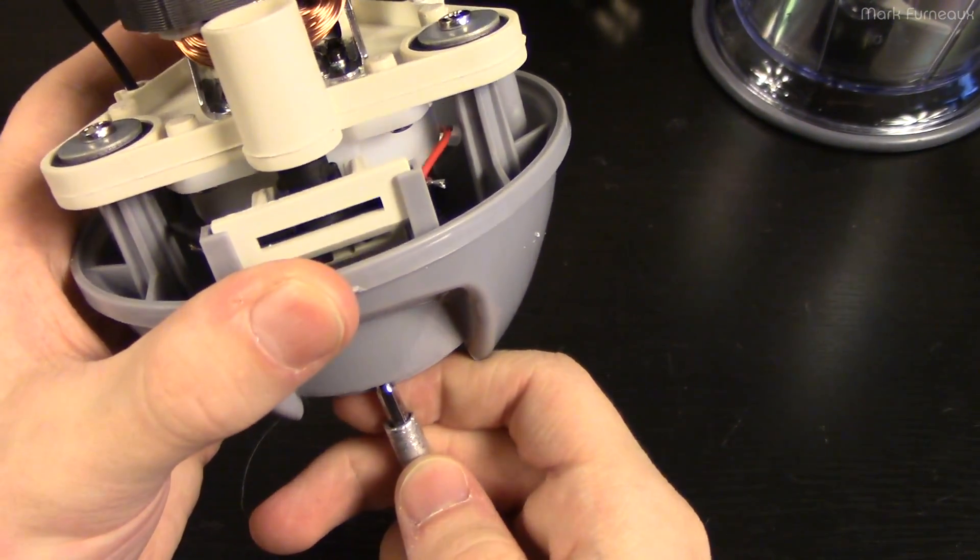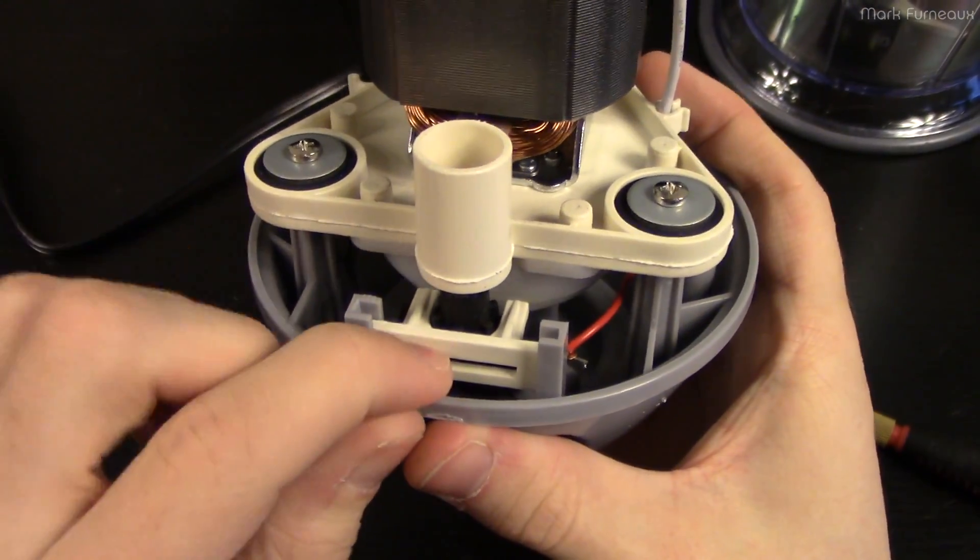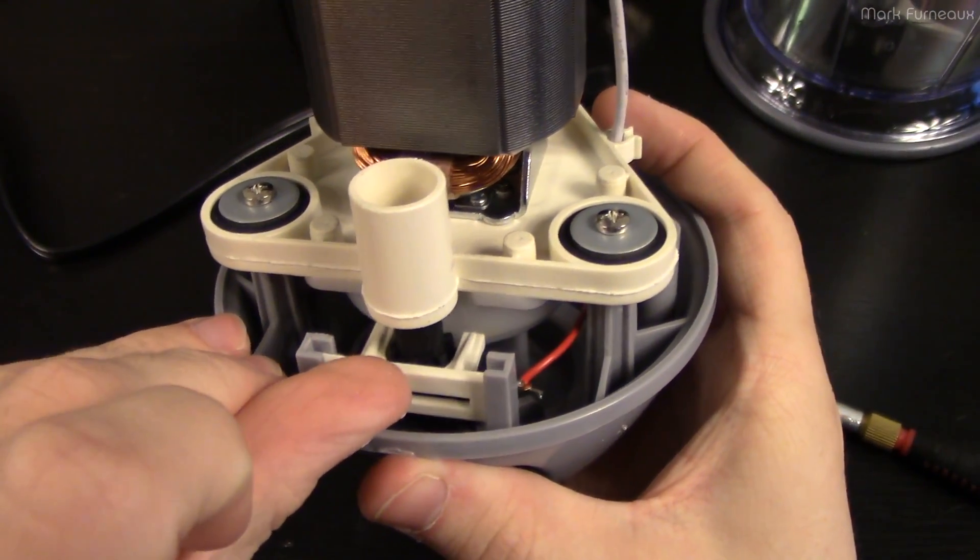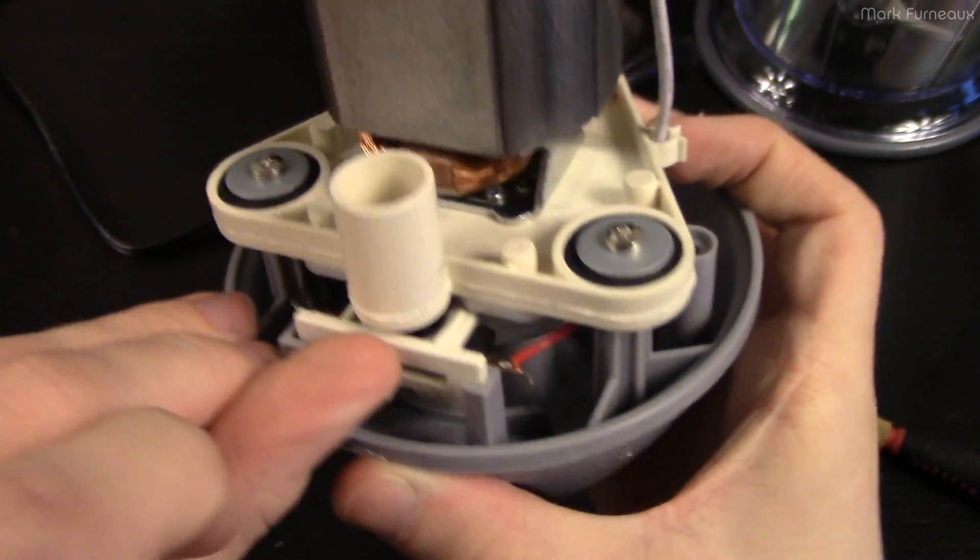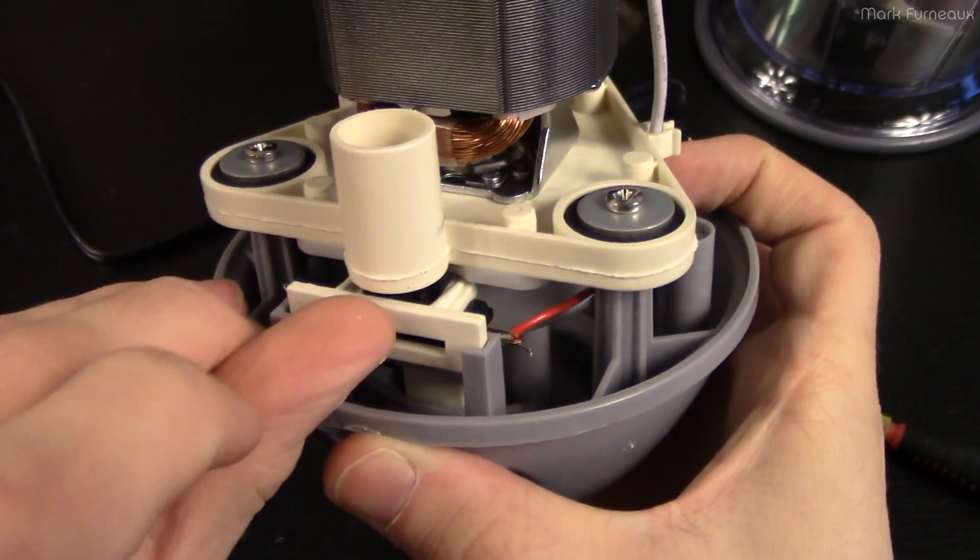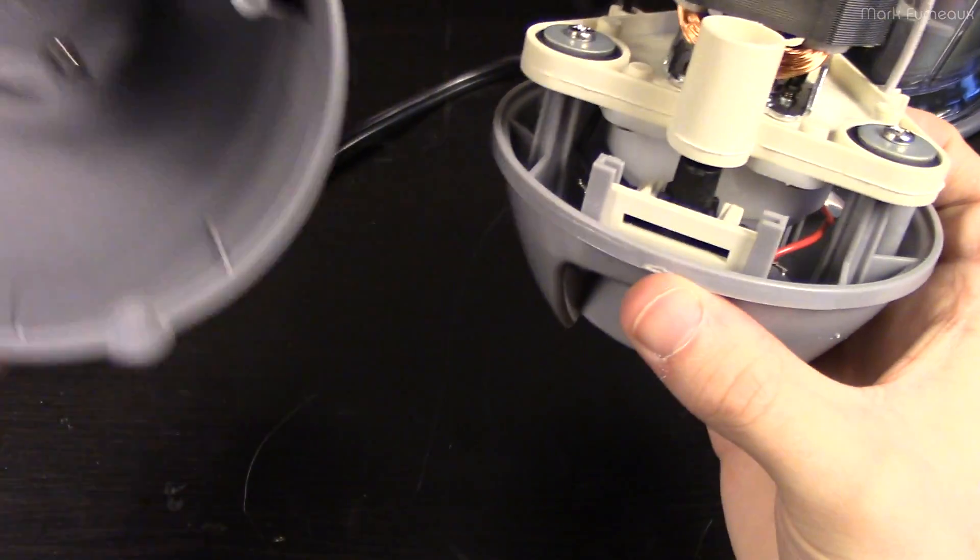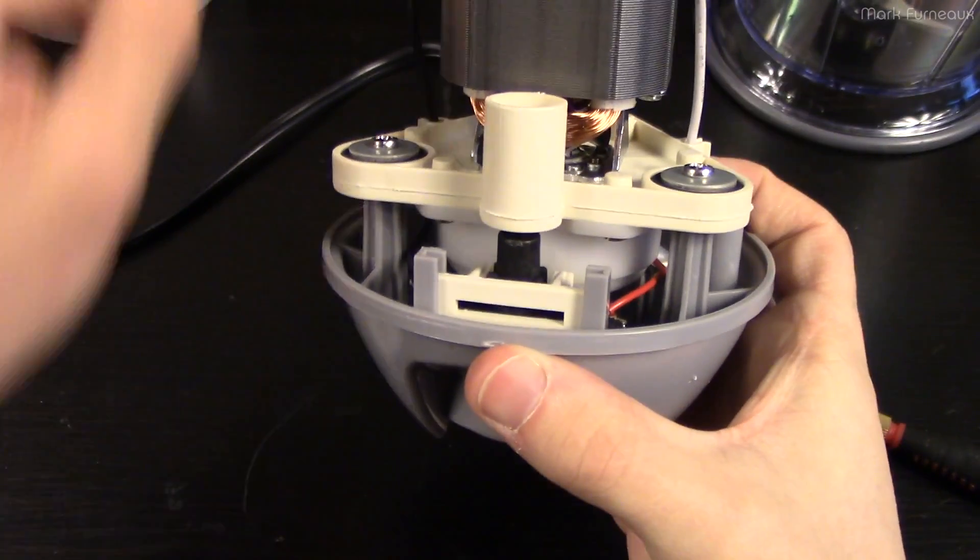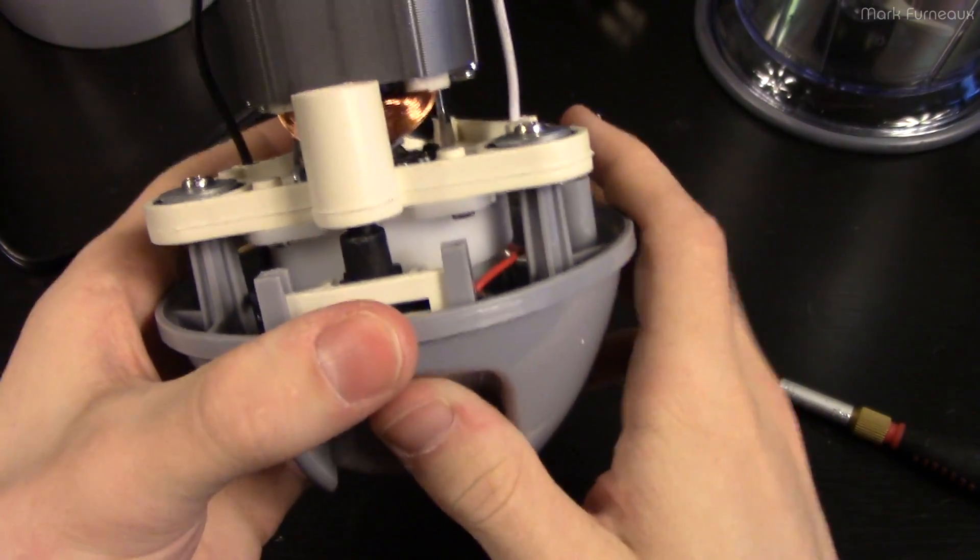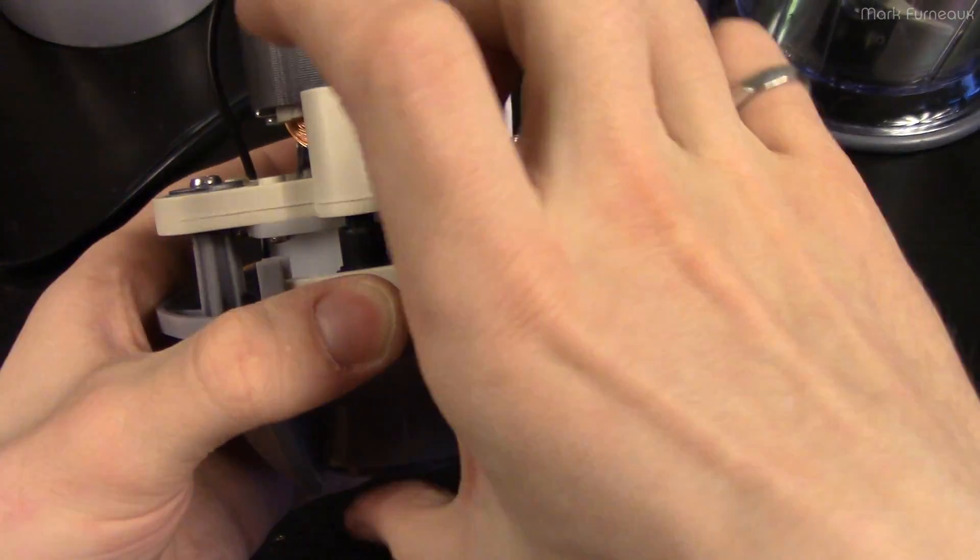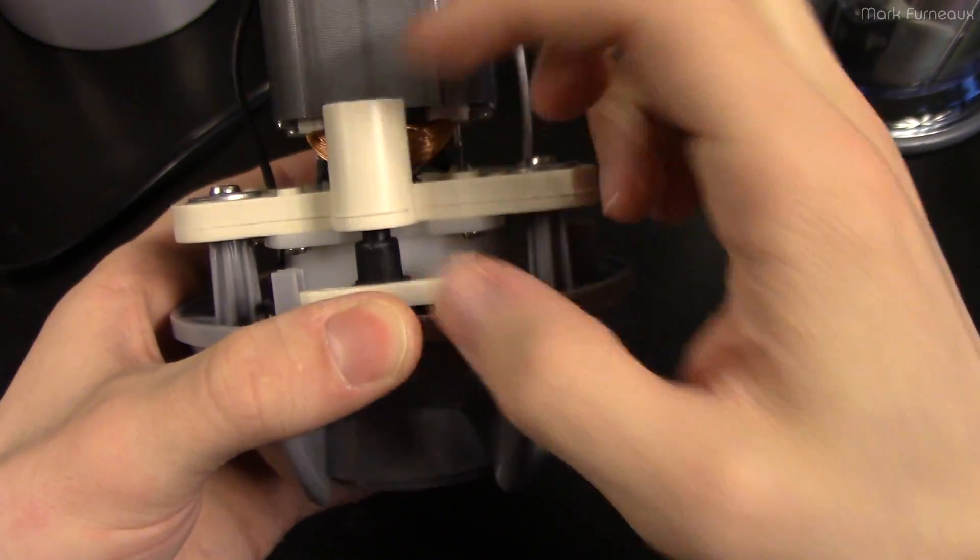So when you push this, it actually brings the entire switch assembly up. So the switch rides in this piece of plastic. And so obviously this post inside the cup is only long enough to press the switch if the switch is already up here. So they've basically just got a pin from the top and a pin from the bottom that compress the switch together.